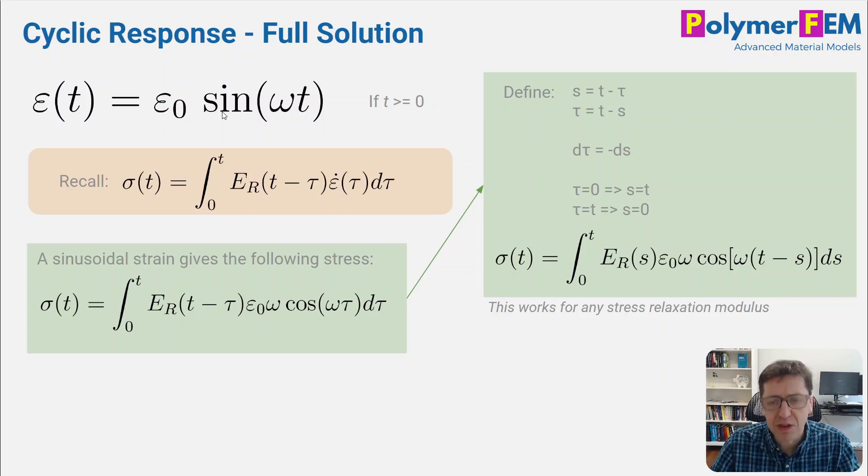For simplicity, I will then actually change the variables, integrating over d tau here, but I'm going to change that so we integrate over ds, and s is t minus tau. So I will switch the variable and basically plug in these substitutions here, and this is the equation that will be valid for any history for any linear viscoelastic material, when your strain is a sinusoidal function. And this is what we will use in these examples.